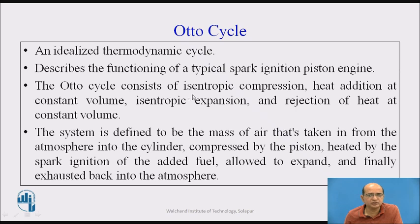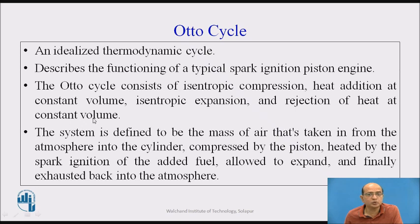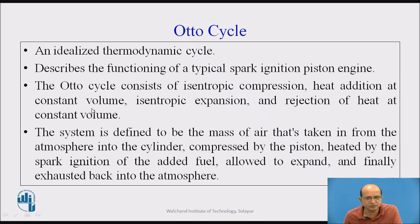The Otto Cycle consists of four processes. First is isentropic compression. Second is heat addition at constant volume. Third is again isentropic expansion. Fourth is rejection of heat at constant volume. Isentropic can also be called adiabatic, and constant volume can also be called isochoric. Isentropic means entropy remains constant, meaning there is no heat transfer through the engine walls.